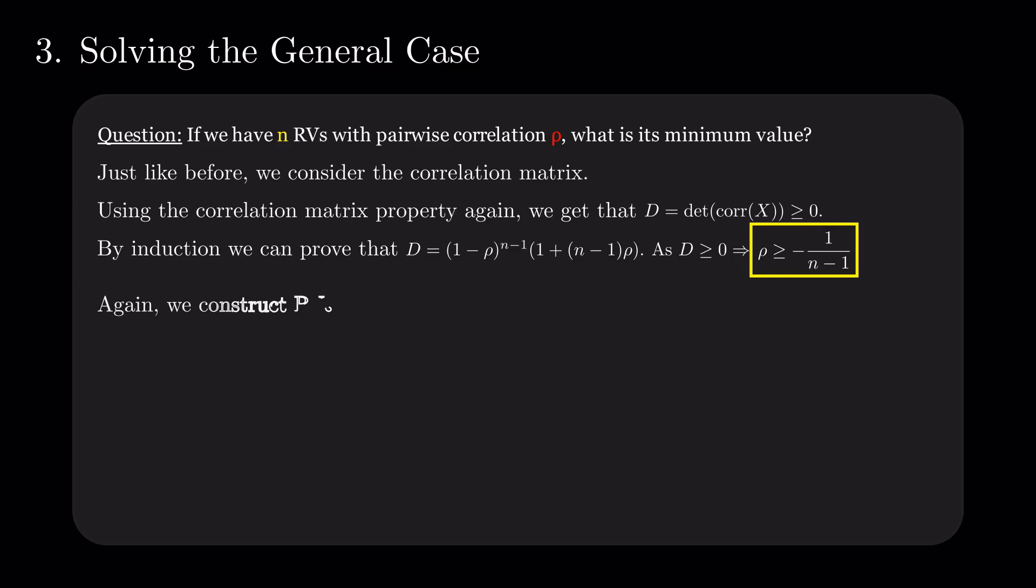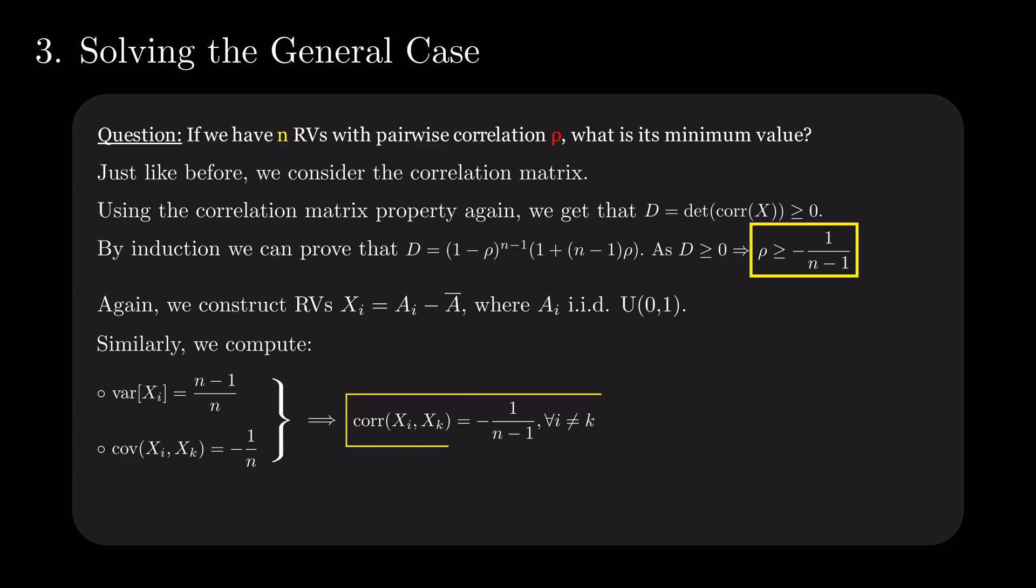We construct again the random variables xi as the difference between ai and the mean of the a's, where ai are iid standard uniform. With a similar rationing as in the previous part, we compute the variance of xi. It is n-1 divided by n. The covariance of xi and xk turns out to be minus 1 divided by n. From the correlation formula, we obtain the correlation between any distinct xi and xk to be minus 1 divided by n-1, just the lower bound we observed before.